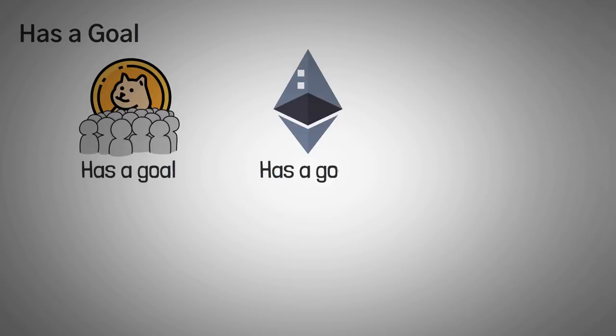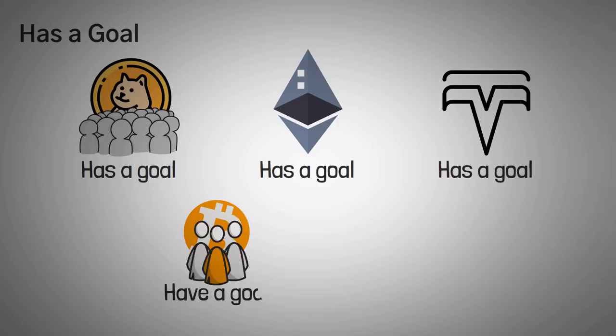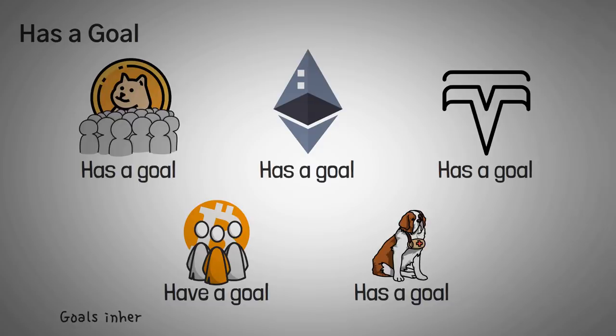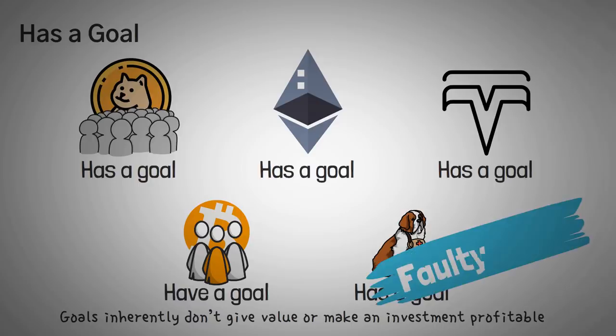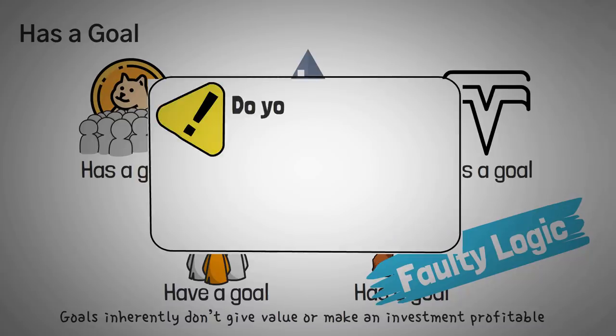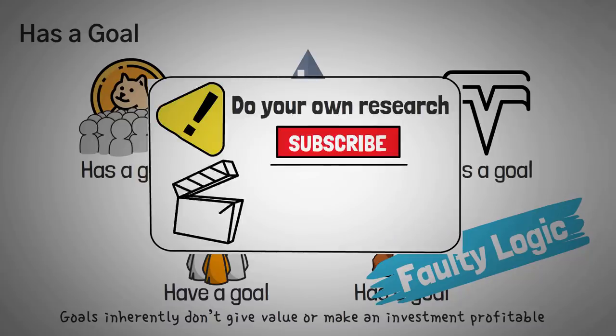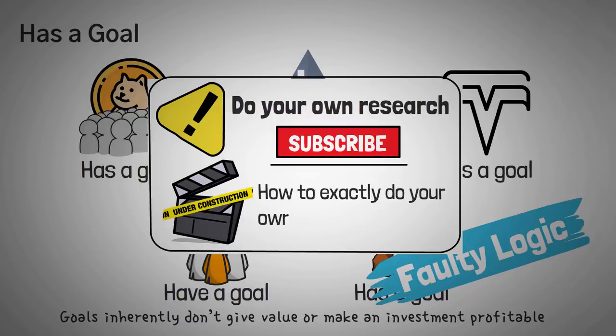The last thing he mentions here is that he believes Dogecoin is a great investment opportunity simply because the community has a goal. Now Ethereum has some goals, Tesla has some goals, even a group of representatives of Bitcoin have set up specific goals. In fact, I can guarantee you my dog has some goals when I let him outside in the morning and he sees the squirrel across the street. Great, goals themselves do not give value or make an investment profitable. This is faulty logic. Faulty logic has no place for any investor, especially an investor who has accumulated a large following. So please, do your own research and subscribe if you haven't already, because I'm soon going to be posting a video on exactly how to do your own research.